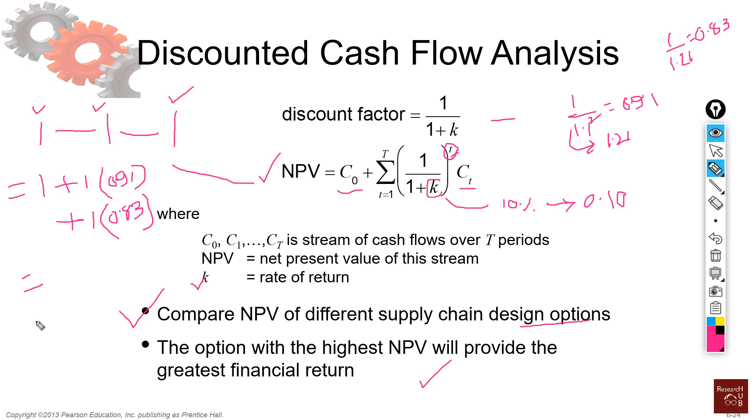So then if I just add all this up, my total net cash flow, the present value of my net cash flow is $2.74.